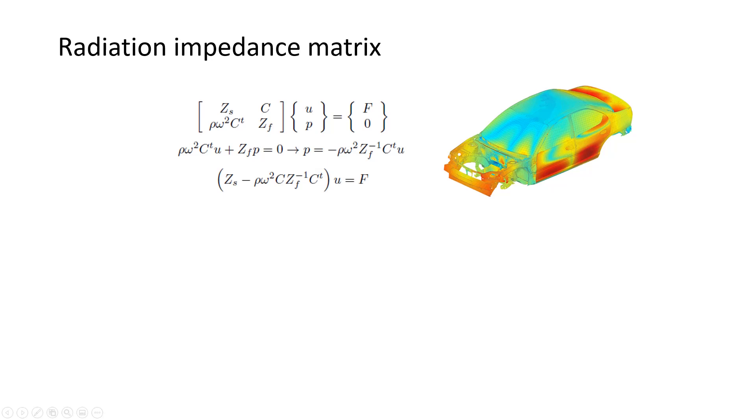And if I put that into the first equation, I now obtain an equation where the pressure unknown has been eliminated. And I see that I have a modified impedance matrix multiplying the displacement equal forces. And this modified impedance matrix, rho omega squared C times Zf inverse times Ct, I call the radiation impedance matrix, and I denote Zeta A.